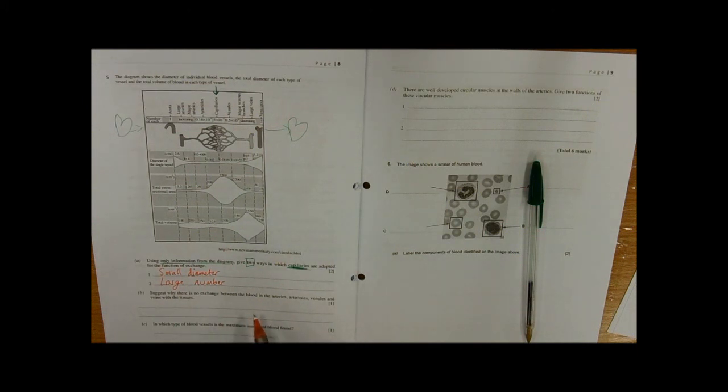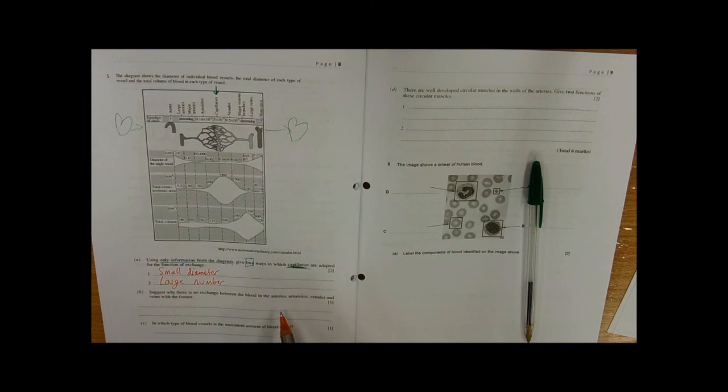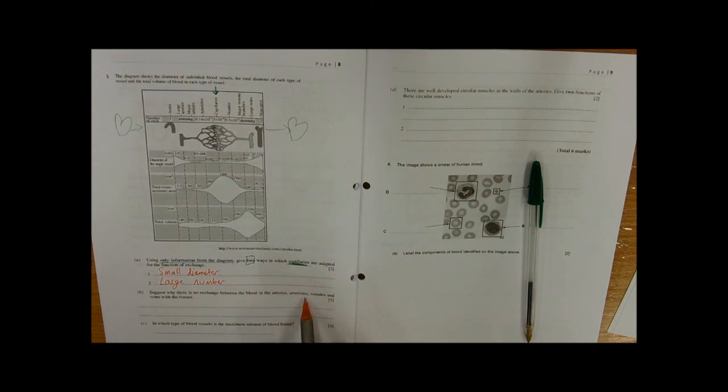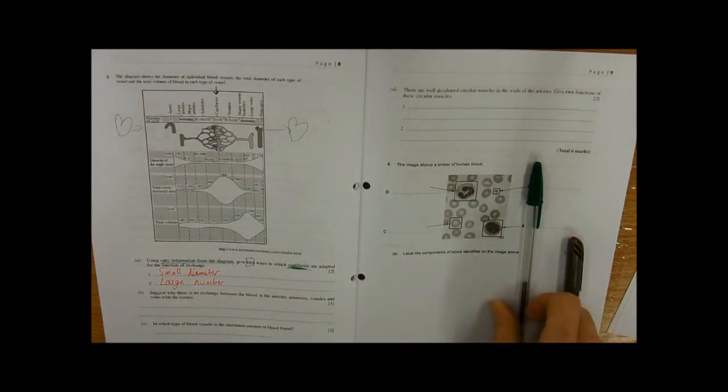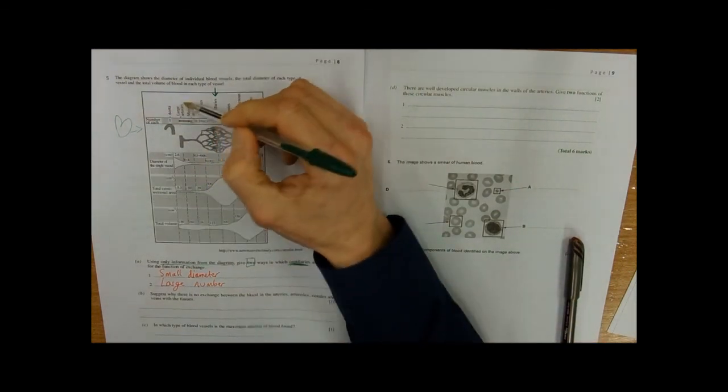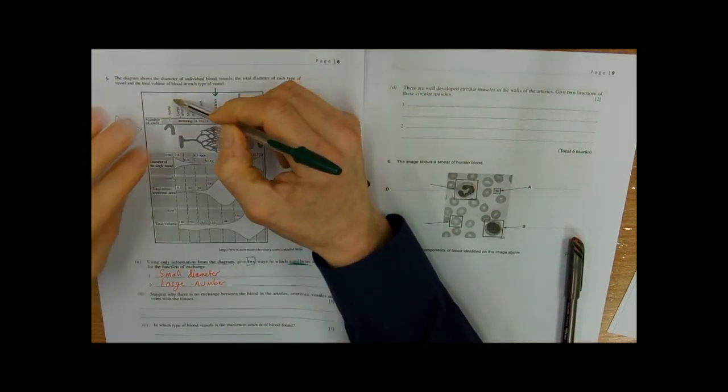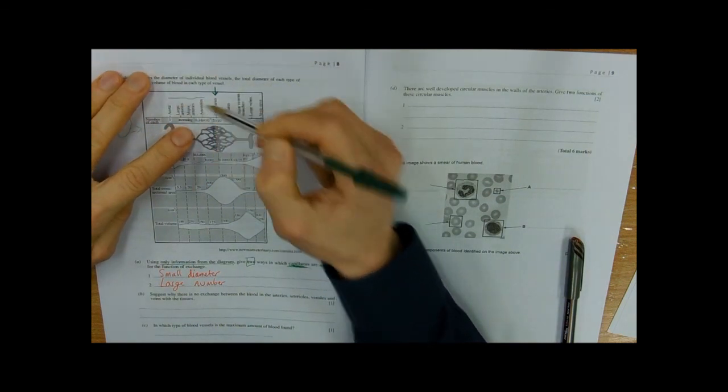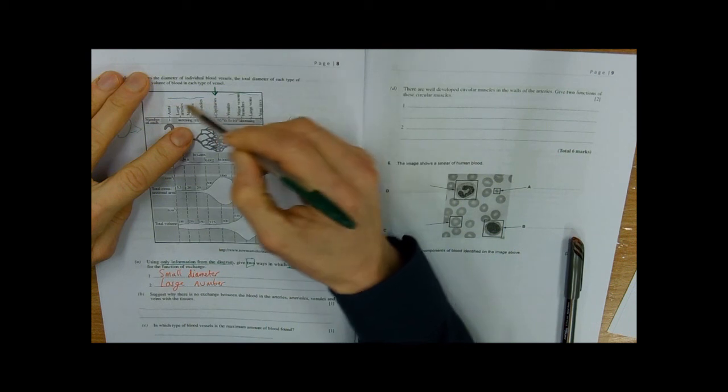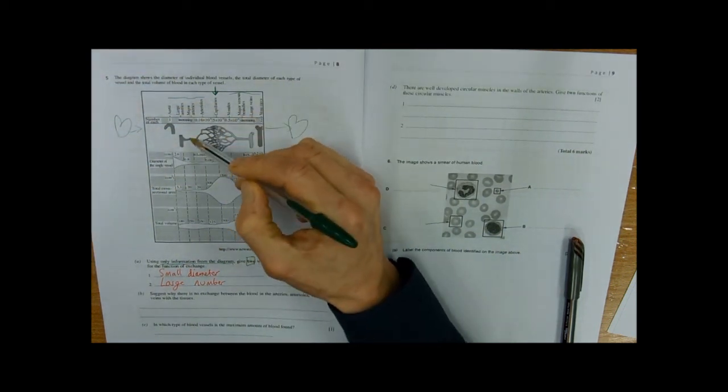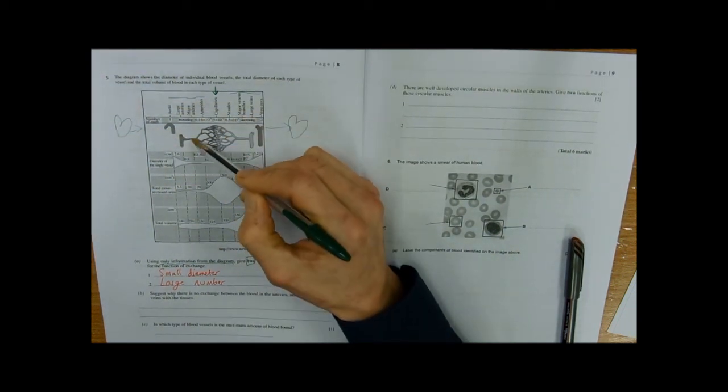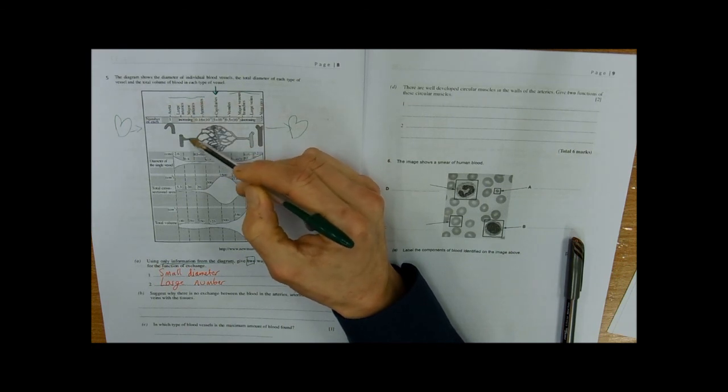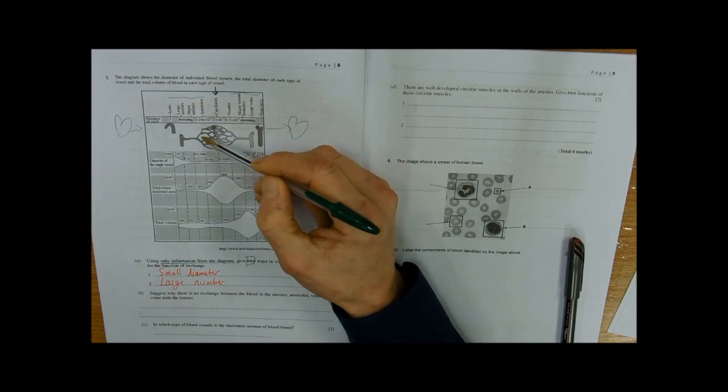So just, why is there no exchange between the blood in the arteries, arterioles, venules, and veins with the tissues? Arteries and arterioles, where are we here? We're talking about these here and these here. Why is there no exchange between that and the tissues?